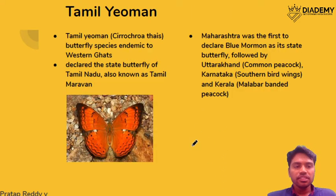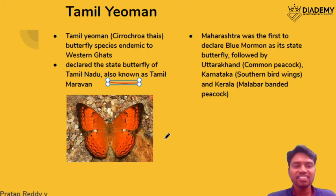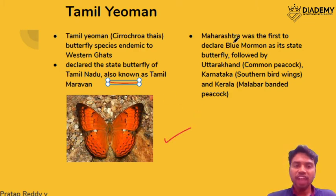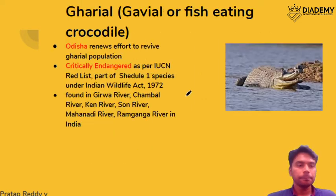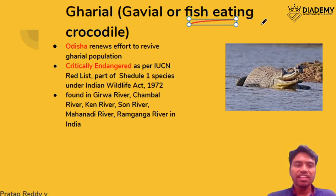Tamil Yeoman is a butterfly. The Tamil Nadu government has recently declared it as the state butterfly. Similar examples include Maharashtra's Blue Mormon, Uttarakhand's Common Peacock, Karnataka's Southern Birdwing, and Kerala's Malabar Banded Peacock. The gharial, which is a fish-eating crocodile, has seen new conservation efforts.